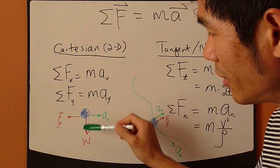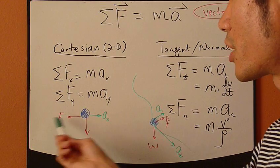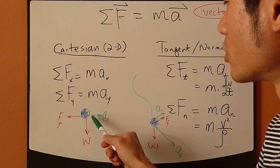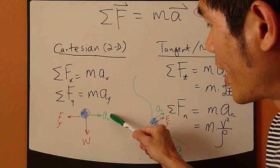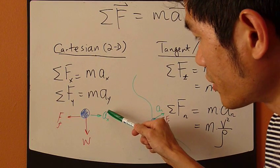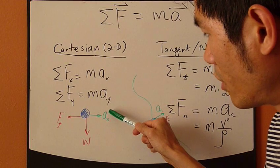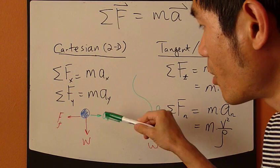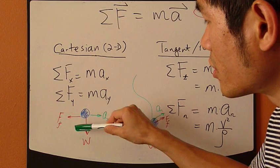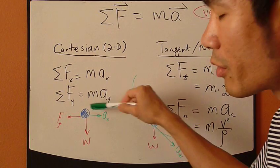For example, you have this particle. Maybe it's traveling along this horizontal direction. And it's subject to weight and friction force and it results in this horizontal acceleration to the right. So you apply these equations to this free body diagram right here.